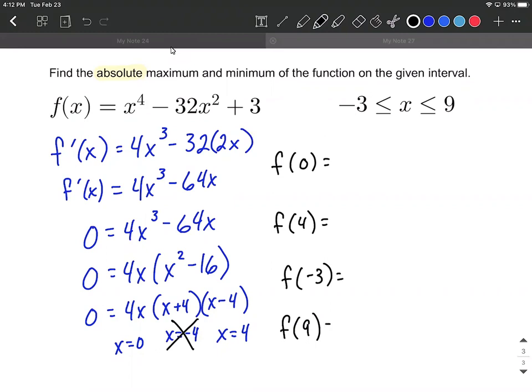So each one of these gets plugged back into our original function. So it's going to look like zero to the fourth power minus 32 times zero squared plus 3 is going to be 3.